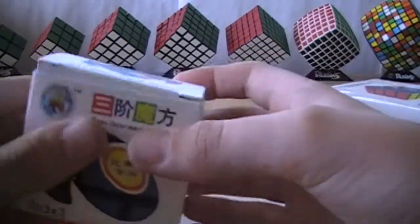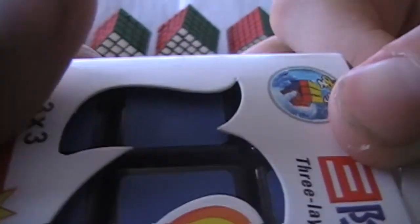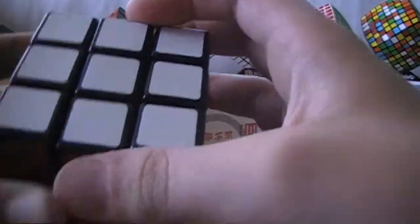I think we'll open these Shengshou Cubes up first. That's an interesting textured sticker. It looks almost like a QiYi tile. I'll have to check that out. Oh yeah, that definitely does have a... oh wow. That feels almost like a QiYi tile.